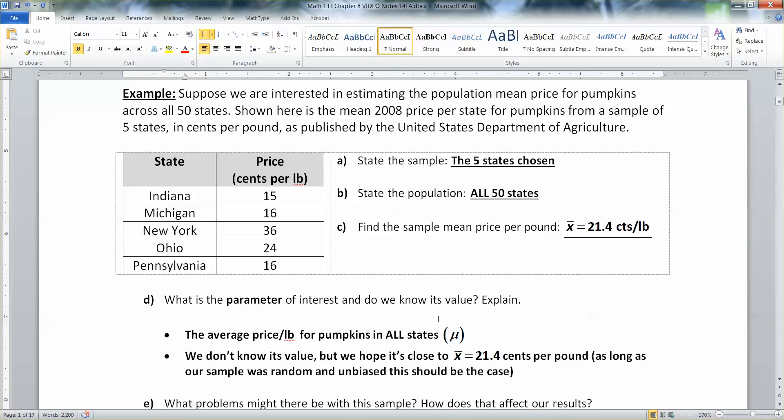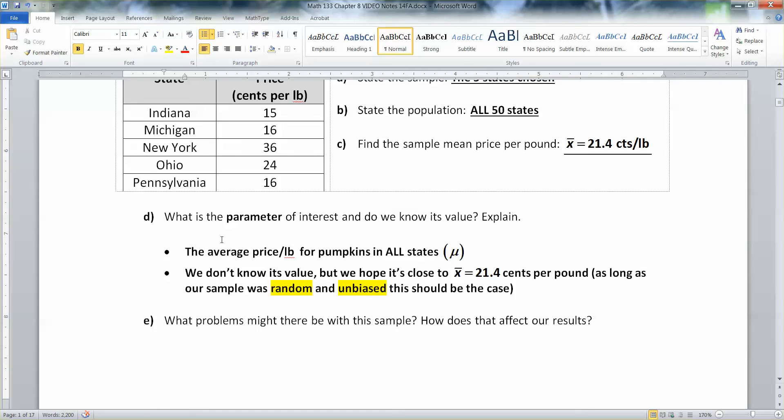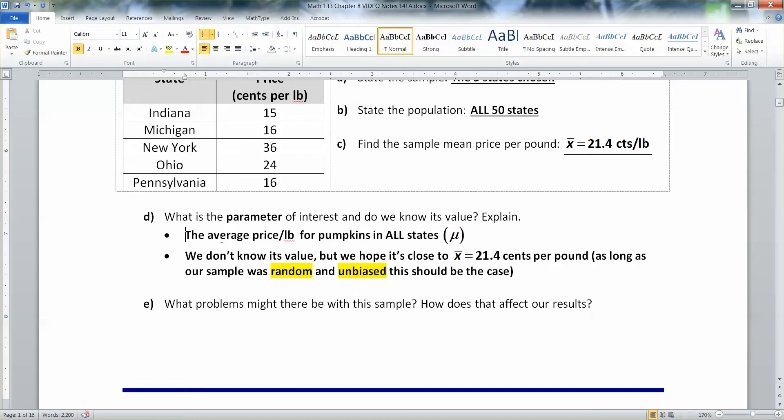Oh, but we'll take a moment and look at our sample. Was our sample truly random and unbiased? Well, our sample included the states Indiana, Michigan, New York, Ohio, and Pennsylvania. Which, if you know anything about the geography of the U.S., that means they're all kind of in the same region.